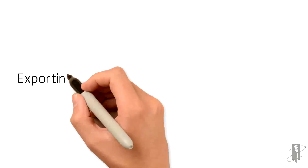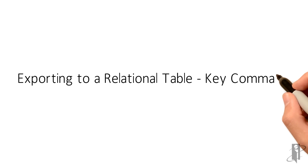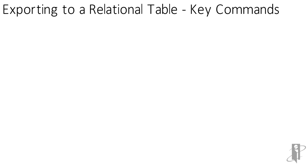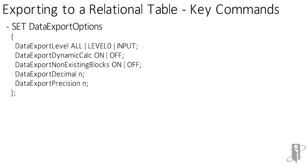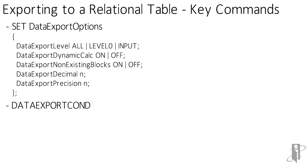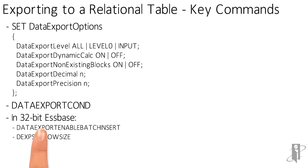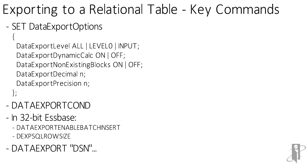The key commands we're probably going to use for a relational table are: what level we want to export, whether to export dynamic calc members, whether to create or not create existing blocks when it exports, what the decimals and precision are, and possibly a conditional export to not export the data unless it meets some sort of value condition. But the key part is data export DSN.